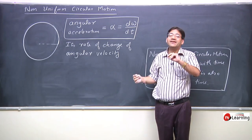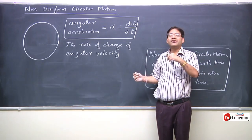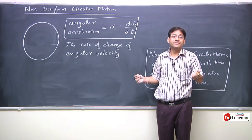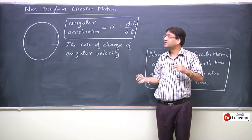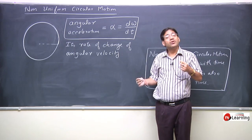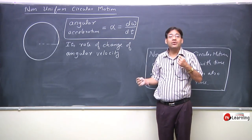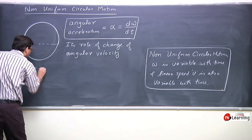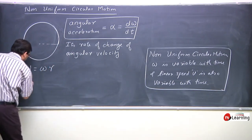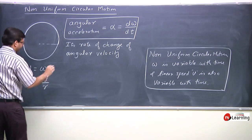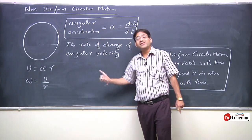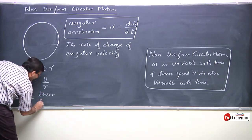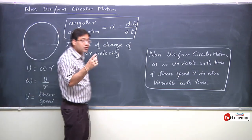In linear dynamics, when linear velocity is constant we have uniform circular motion. But when a particle in circular motion has a changing linear speed, that is non-uniform circular motion. Since velocity V = ωR, or ω = V/R, where V is linear speed, in non-uniform circular motion linear speed varies.